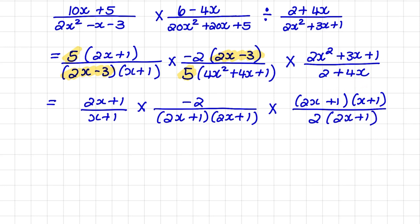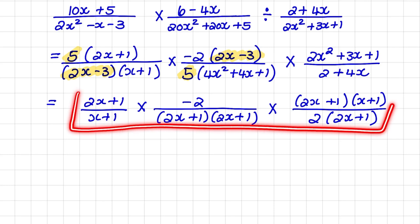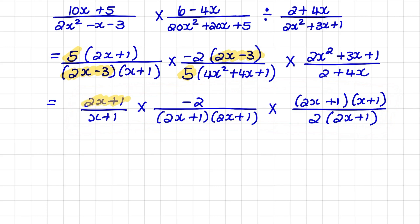So before I move on, I would inspect the three fractions together again. And I noticed that 2x plus 1 can cancel out 2x plus 1 in the denominator. And 2x plus 1 next to it can also cancel out 2x plus 1 in the third fraction.